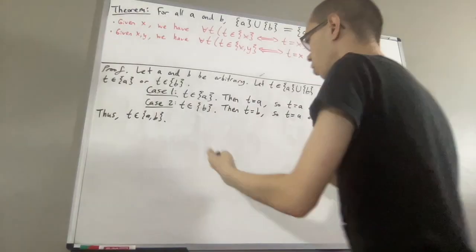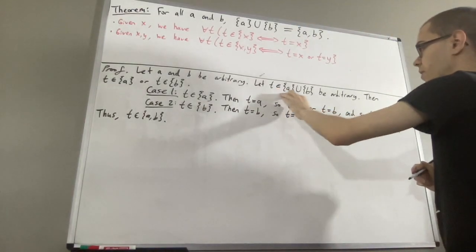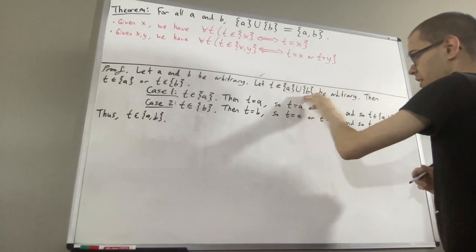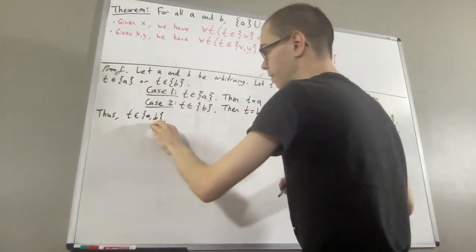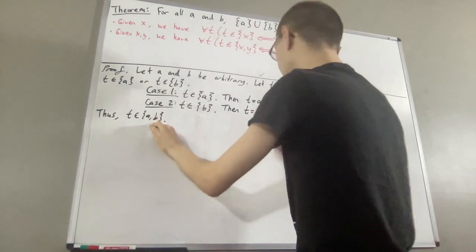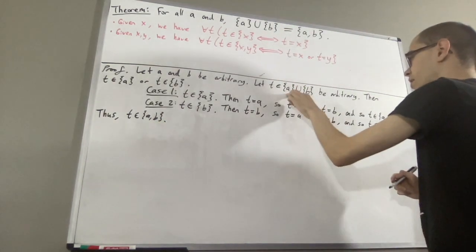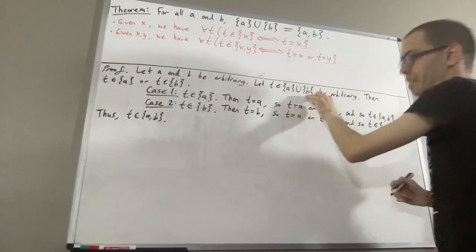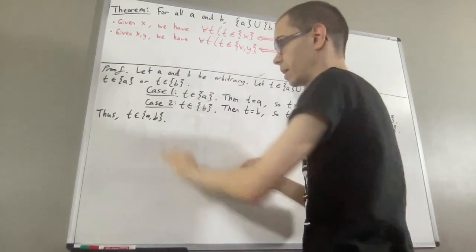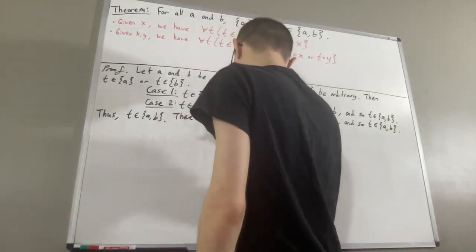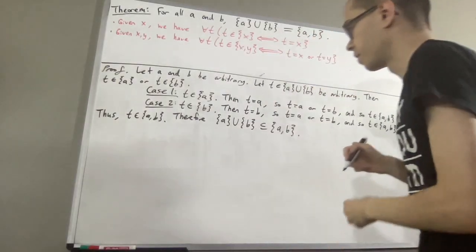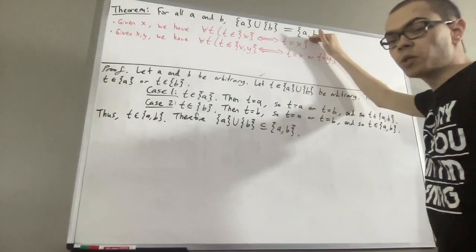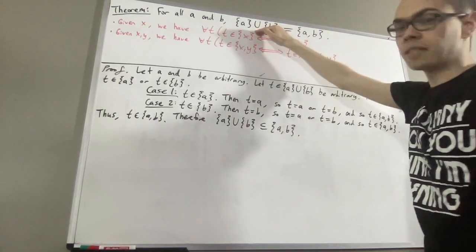What we've shown here overall is: given an arbitrary element T in the union of the singleton set of A and the singleton set of B, it follows that T is an element of the pairset of A and B. And that tells us that the union of the singleton set of A and the singleton set of B is a subset of the pairset of A and B. So we have shown that this set is a subset of this set.